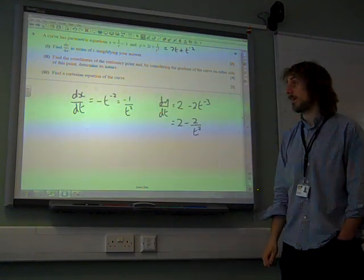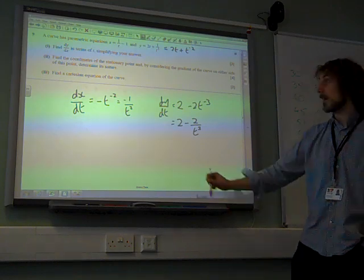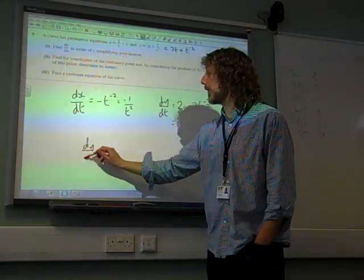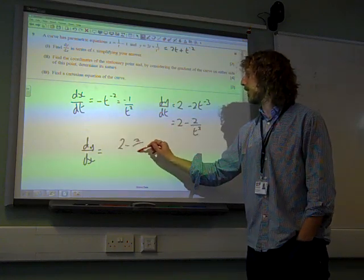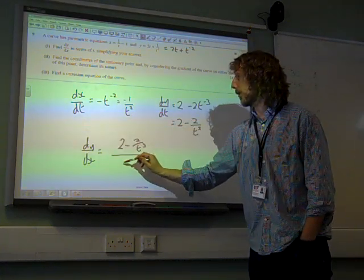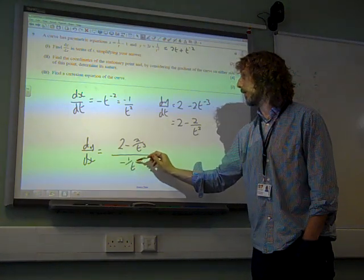So then it's dy by dt divided by dx by dt to get dy by dx. So that's this one, 2 minus 2 over t cubed, divided by this one, minus 1 over t squared.